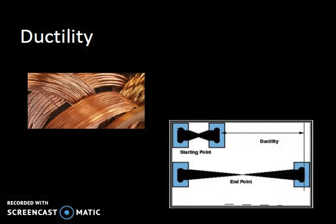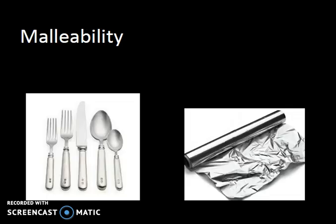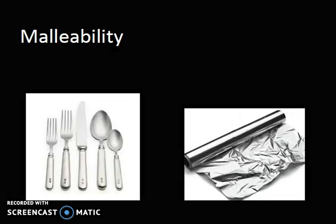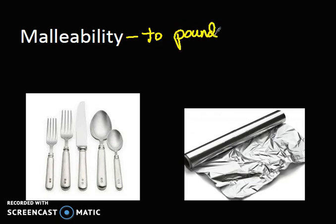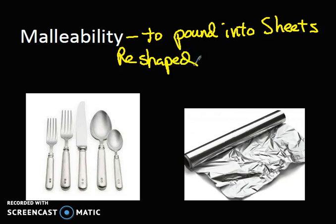Okay, I think one or two more. Alright, malleability. The book calls it the ability to pound, I think it says, into sheets. I think generally, it's just the ability for the substance to be reshaped. To be reshaped.